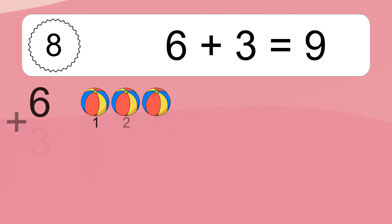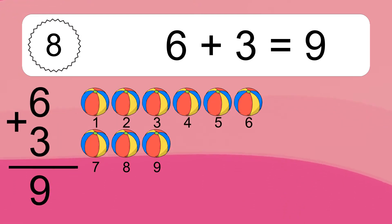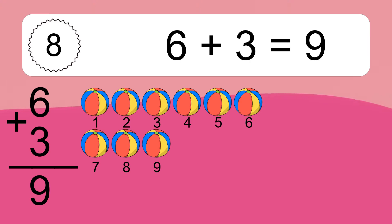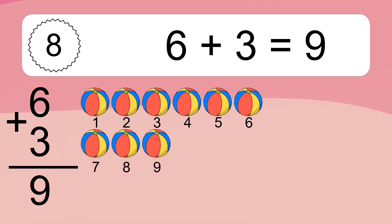6 plus 3 equals what? 6 plus 3 equals 9. Let's count it: 1, 2, 3, 4, 5, 6, 7, 8, 9.